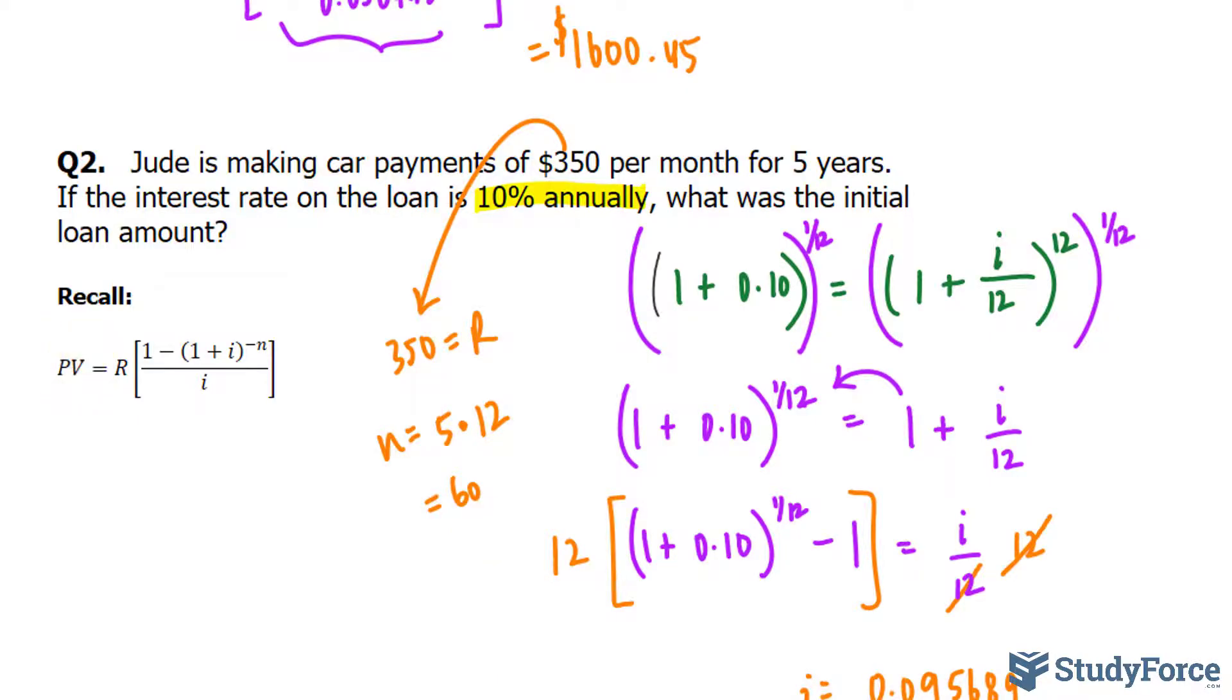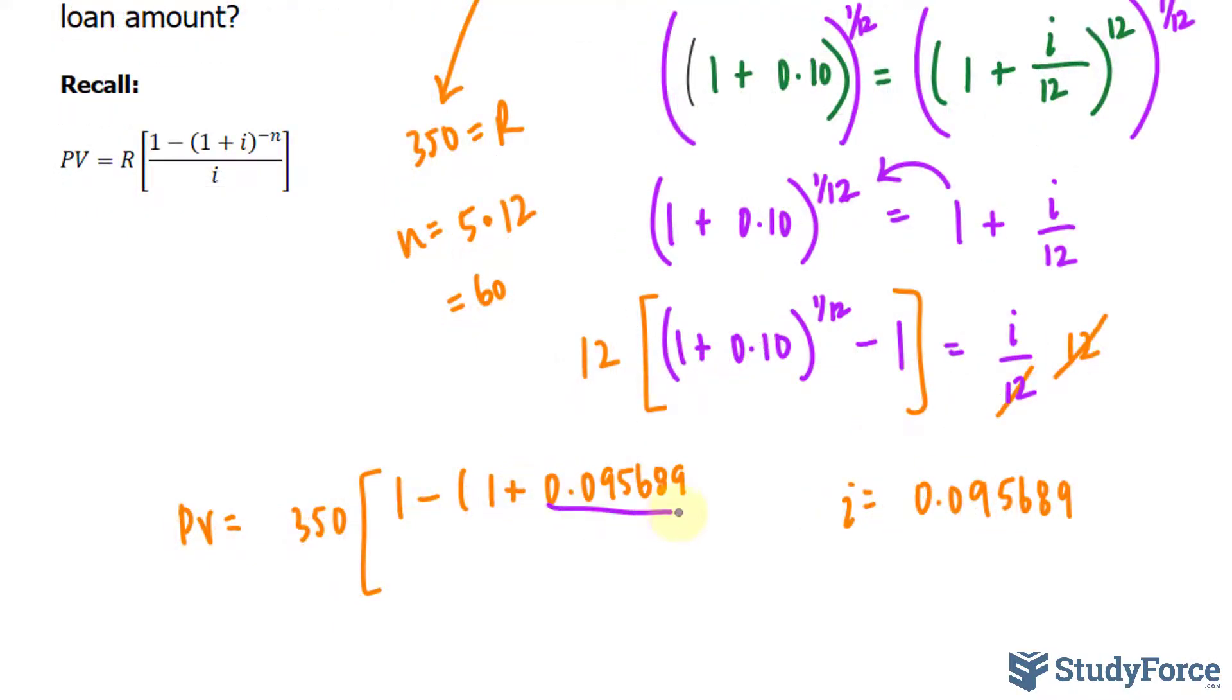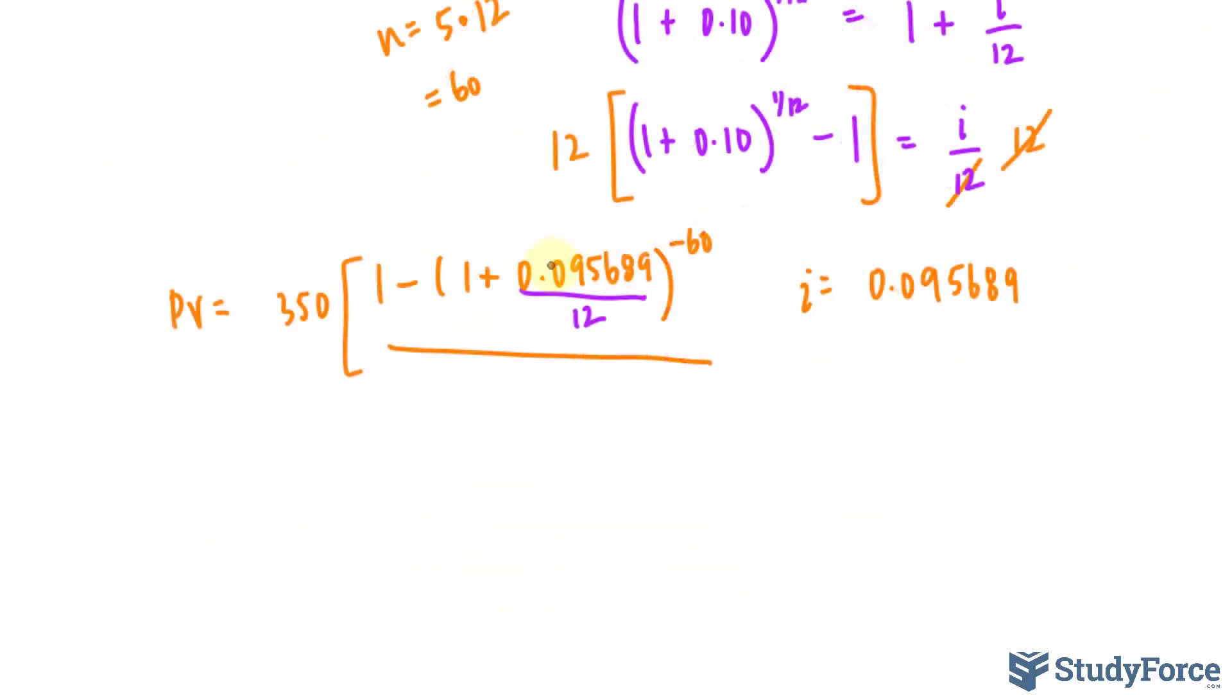We have PV equals 350, open bracket, 1 minus 1 plus the interest rate that we found divided by 12. We already discussed that n will be 60, so negative 60 according to the formula, over the interest rate divided by 12, and that gets written here.